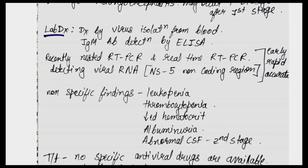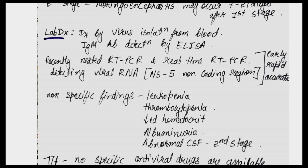Laboratory diagnosis includes: viral isolation from blood; IgM antibody detection by MAC-ELISA (IgM Antibody Capture Enzyme-Linked Immunosorbent Assay); and an early, rapid, and accurate test — nested RT-PCR and real-time Reverse Transcriptase Polymerase Chain Reaction. Since it is a single-stranded RNA virus, RT-PCR is used to detect the viral RNA at the NS5 non-coding region.